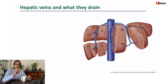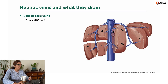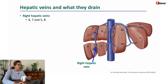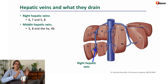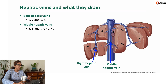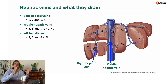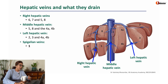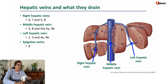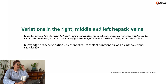Let's quickly look at what the hepatic veins drain. The right hepatic vein drains adjacent sides of segments 6, 7, 5, and 8. The middle hepatic vein drains adjacent sides of 5, 8, and 4. The left hepatic vein drains segments 2, 3, and 4. The spigelian veins drain segment 1 directly into the inferior vena cava. Remember there will be variations — this is just one of the references, and there are many publications on this topic.